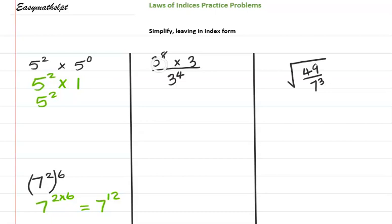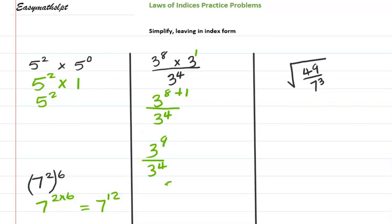In this case we have 3 to the 8th power multiplied by 3. We know that a term by itself has a power of 1. Multiplying same base, we add the powers: 3 to the 8 plus 1, divided by 3 to the 4th. That gives 3 to the 9th divided by 3 to the 4th. Dividing same base we subtract the powers: 3 to the 9 minus 4, which simplifies to 3 to the 5th.